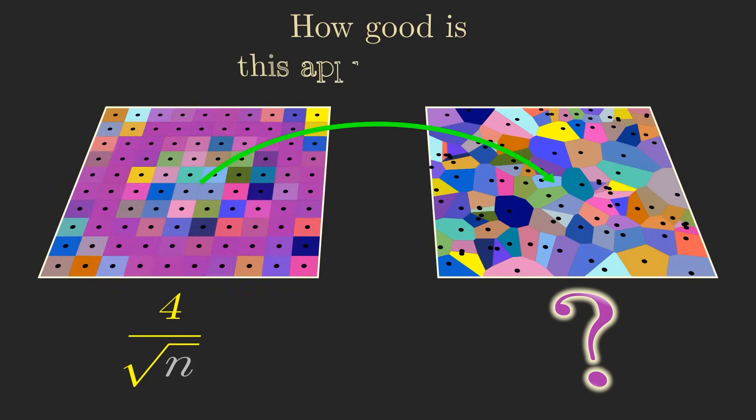So I want you to pause the video here and make a guess as to how well the formula 4 over square root of n approximates the true average perimeter of a cell. Do you think it's greater or less than 4 over square root of n, and why? Put your answer in the comments below.